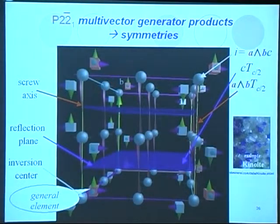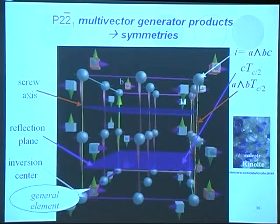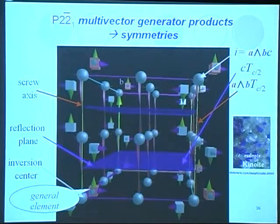Now here, I'll give you an example of this space group. It's primitive, then there are three vectors A, B, C, and they have basically 90-degree angles. The multi-vector generator products generate the symmetries, and here are these products.